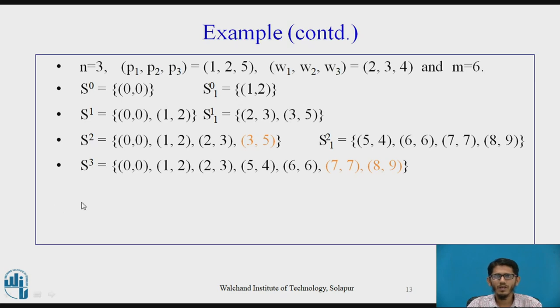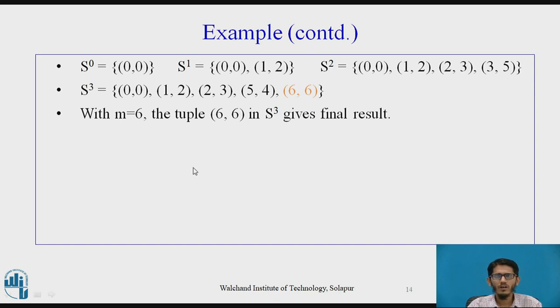Now, this was our example where we found out this s3 from s2 and s21 and after deleting these tuples (7, 7) and (8, 9), this is what we have in s3. Now, once again summarize this s0, s1, s2 and s3 in one slide. Now, with m equal to 6, the tuple (6, 6) in s3 gives the final result. The tuple (6, 6), it does not belong to s2. So, this concludes that x3 value equal to 1 meaning the third object is selected.